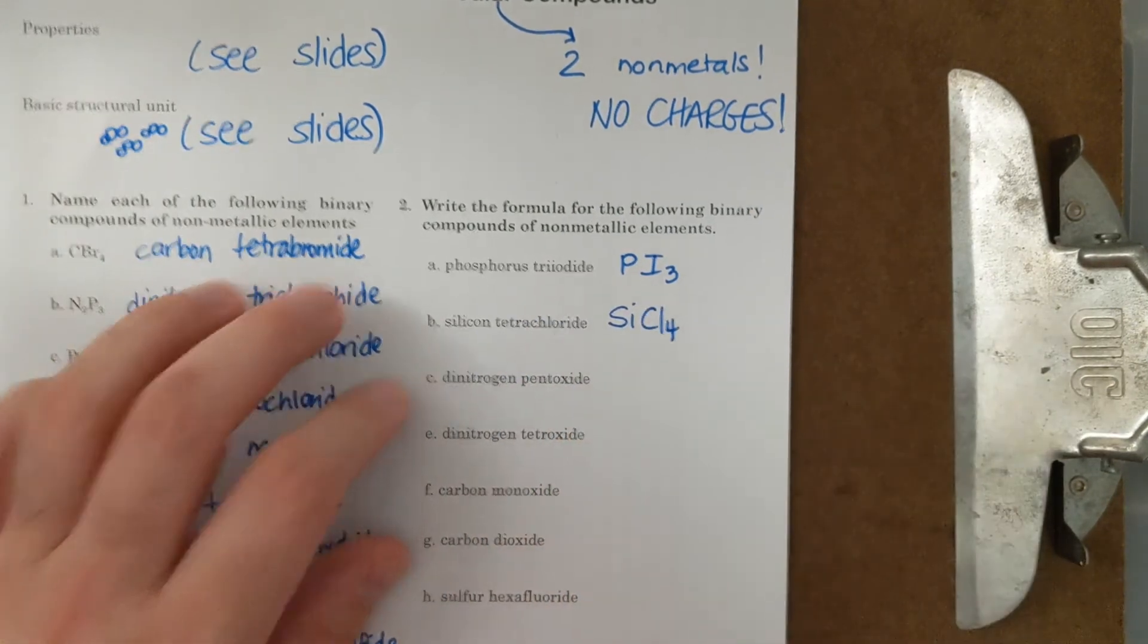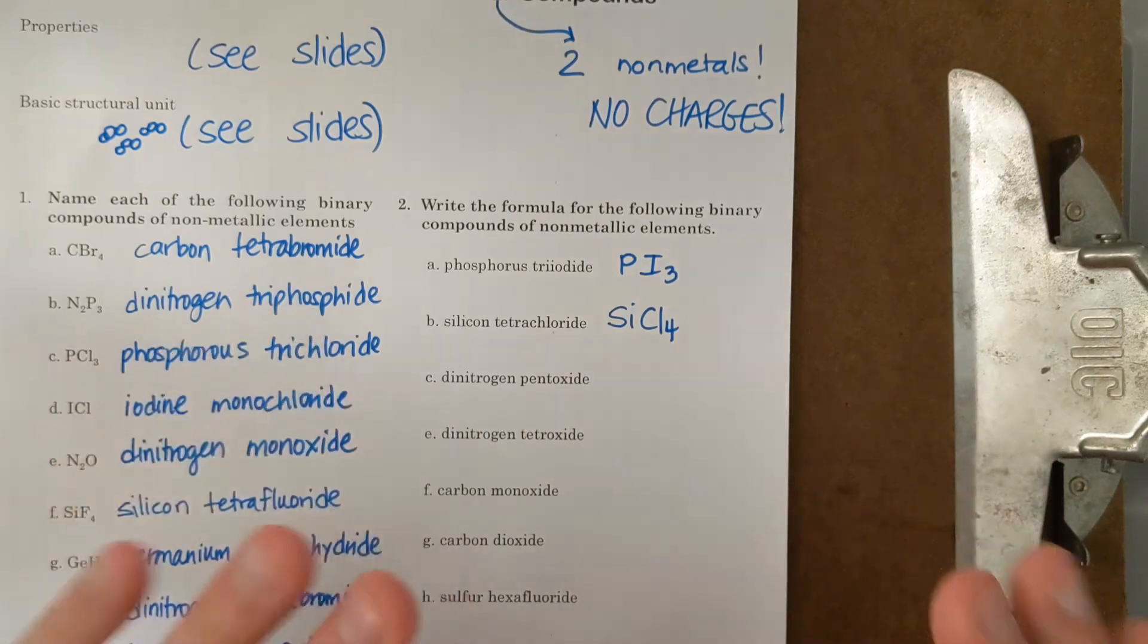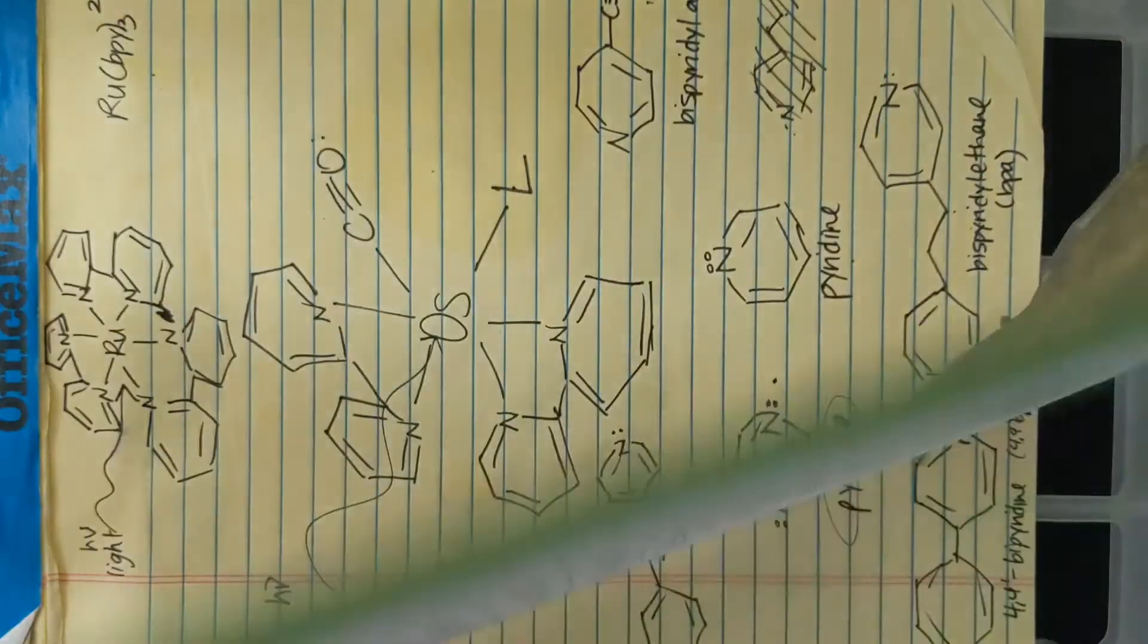Silicon tetrachloride, SiCl4. I think the hardest task is knowing your element symbols, which a lot of us struggle with. So I know them, but if you don't, you can just look on the periodic table, find the elements. Good to go.